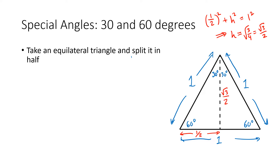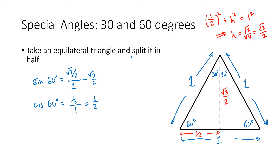Now we can use the definitions of the six trigonometric functions. In that left half triangle, the sine of 60 degrees is opposite over hypotenuse, so that's the square root of three over two divided by one, which equals the square root of three over two. The cosine of 60 degrees is adjacent over hypotenuse, so one half divided by one, which equals one half. The tangent of 60 degrees is opposite over adjacent, so the square root of three over two divided by one half — multiplying top and bottom by two — gives us the square root of three.